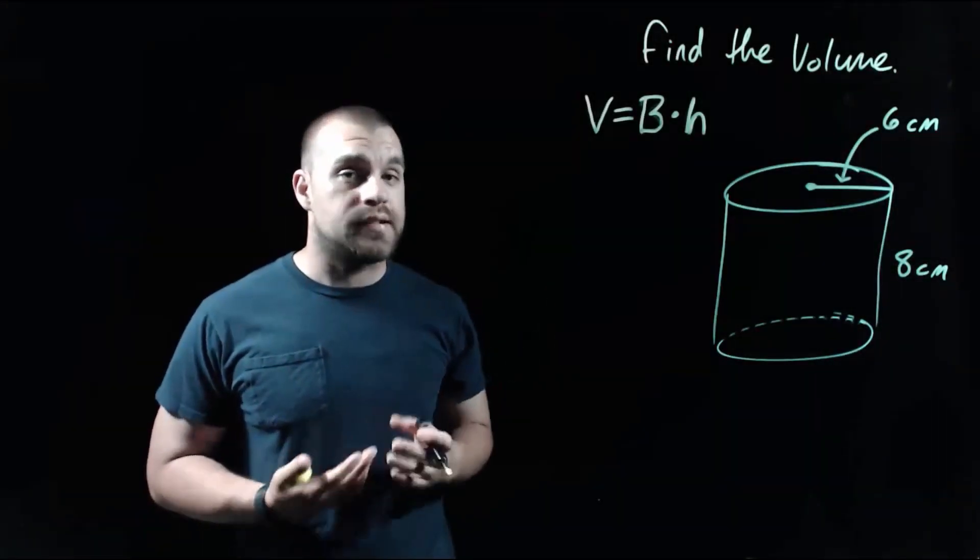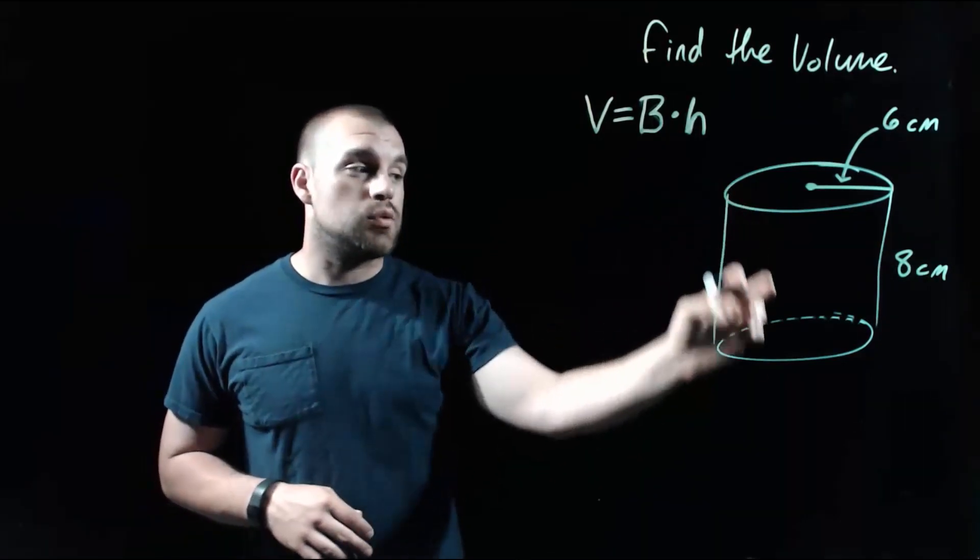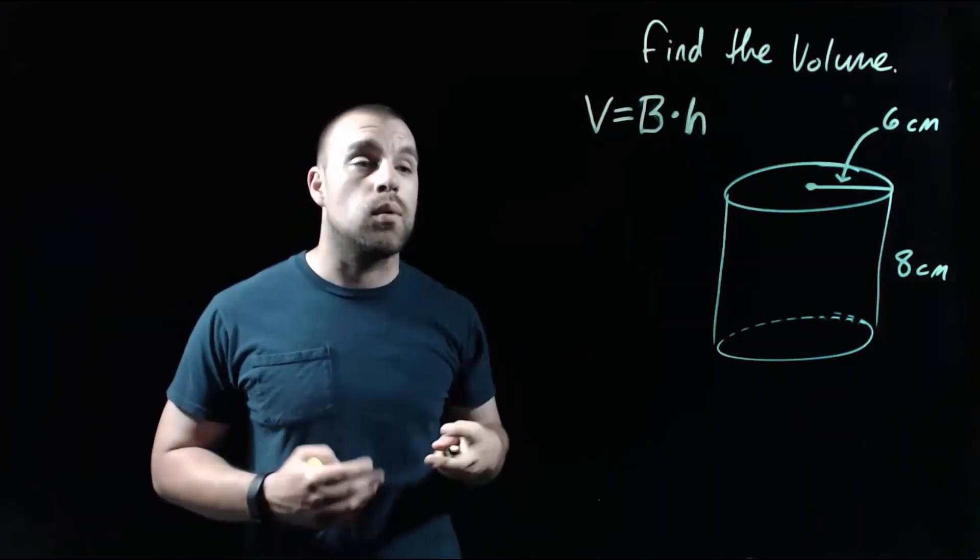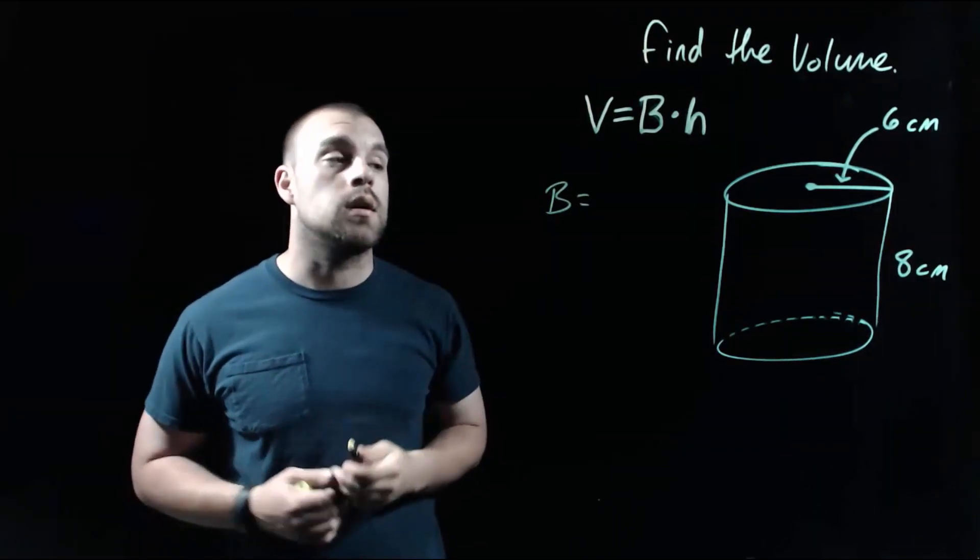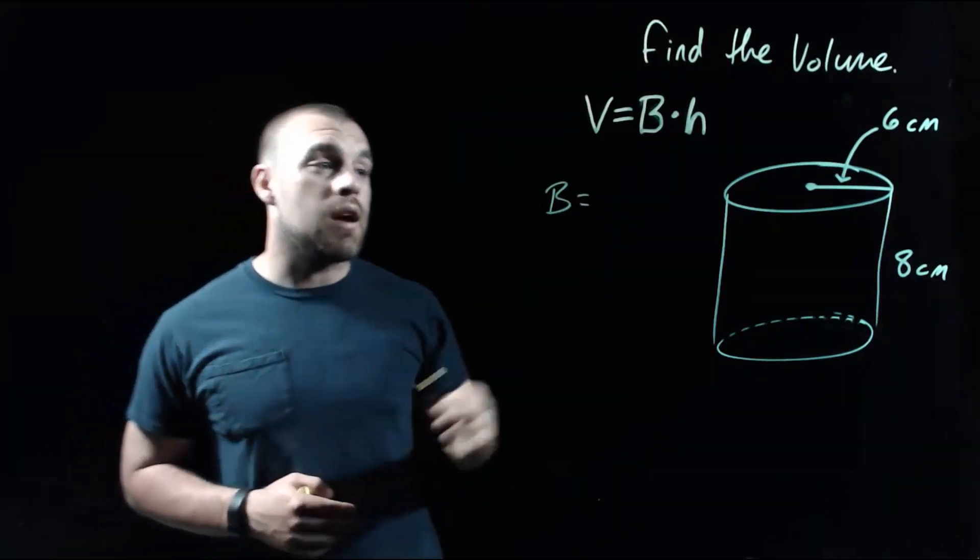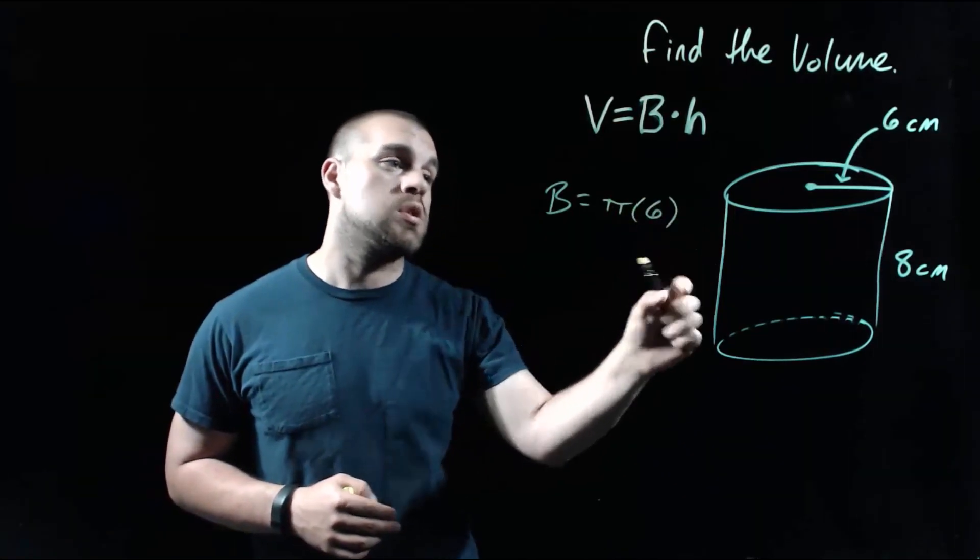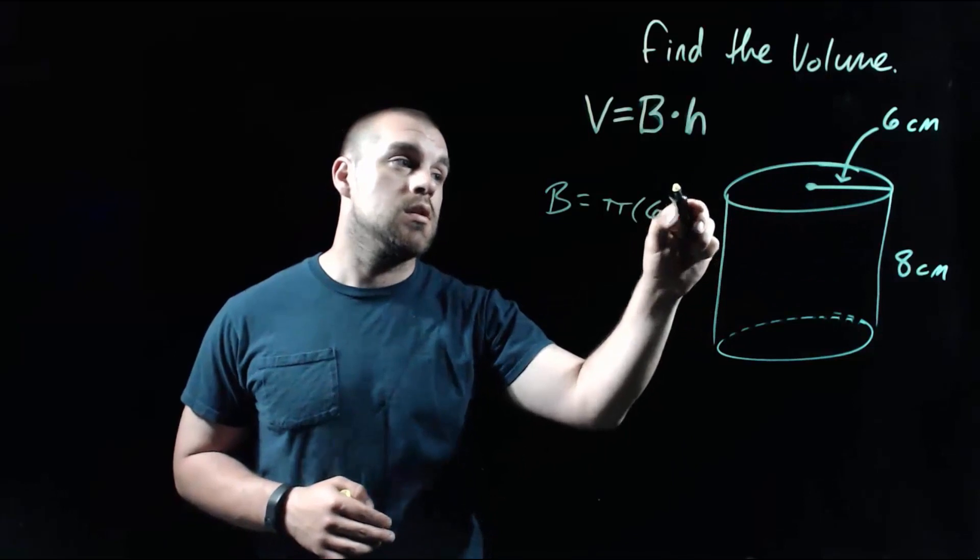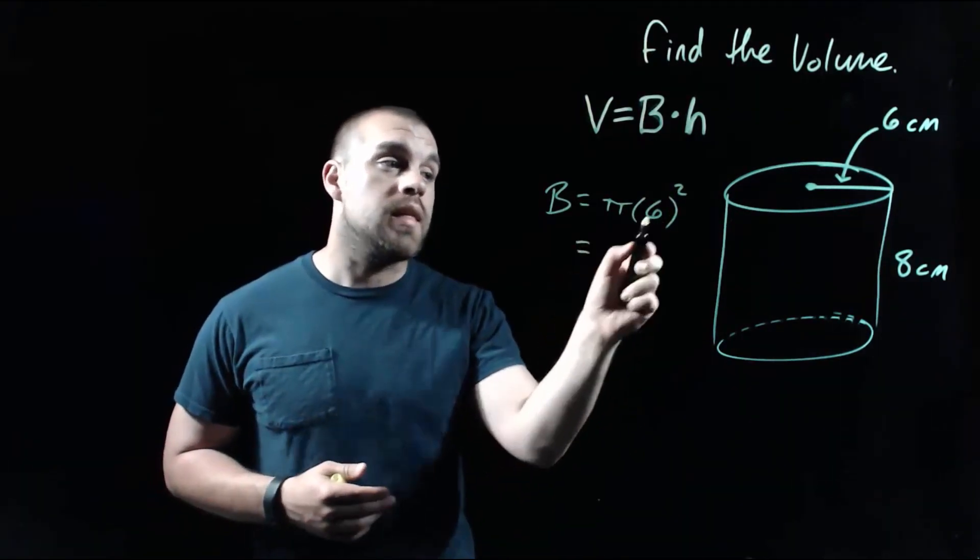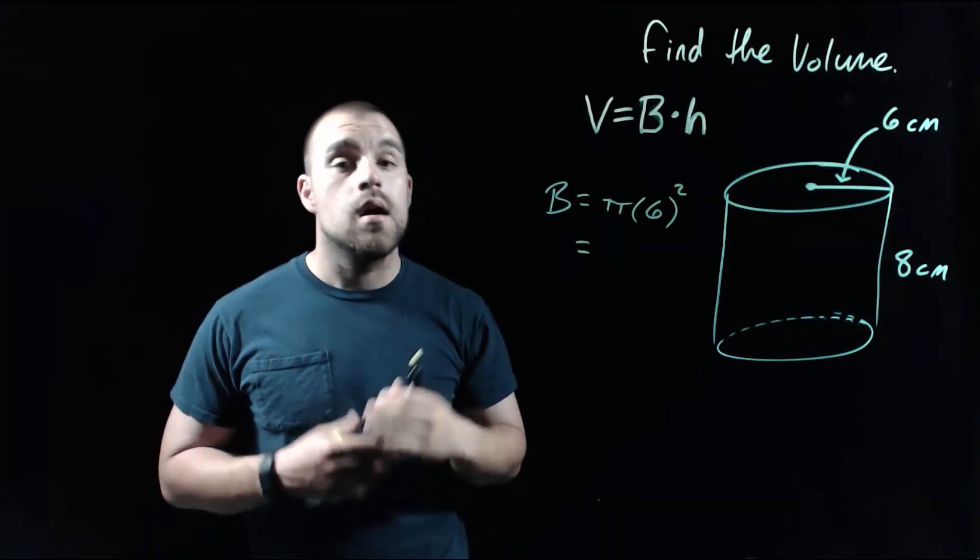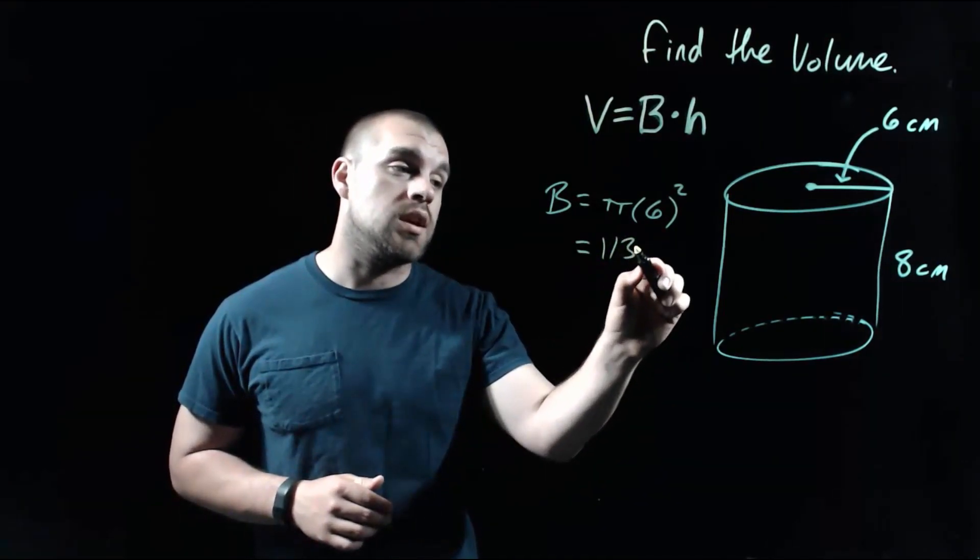If we take a look at this third example, we've got a cylinder. Again, our volume formula hasn't changed, but since we changed the base shape, now we're dealing with circles. Again, we'll have to adjust how we find the area of that base. In order to find the area of a circle, we go pi times the radius, which in this case is six centimeters squared. So if we take six squared, that's 36. And then if we take 36 times pi, I'm going to round that to two decimals. When we do that, we get 113.10.